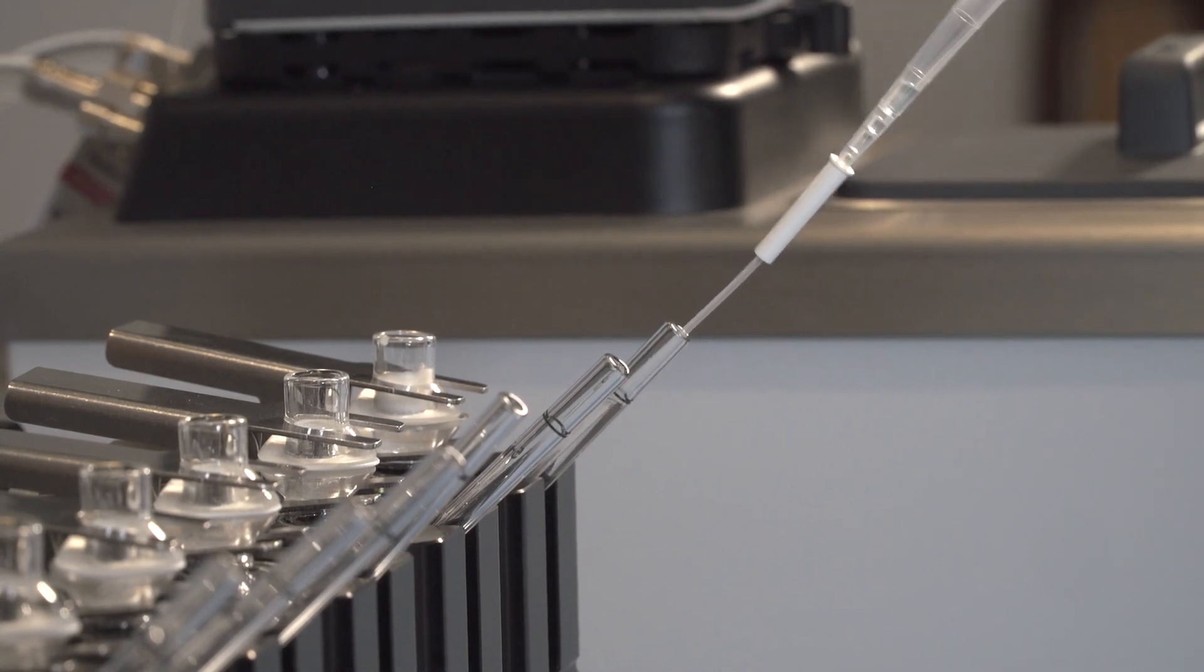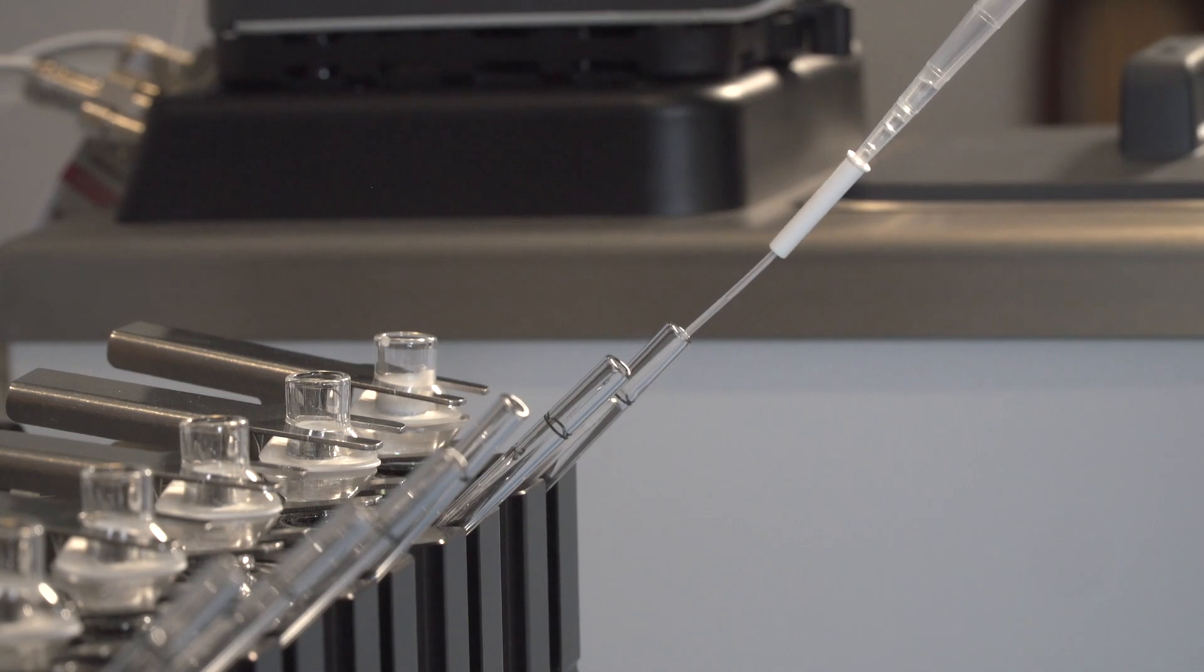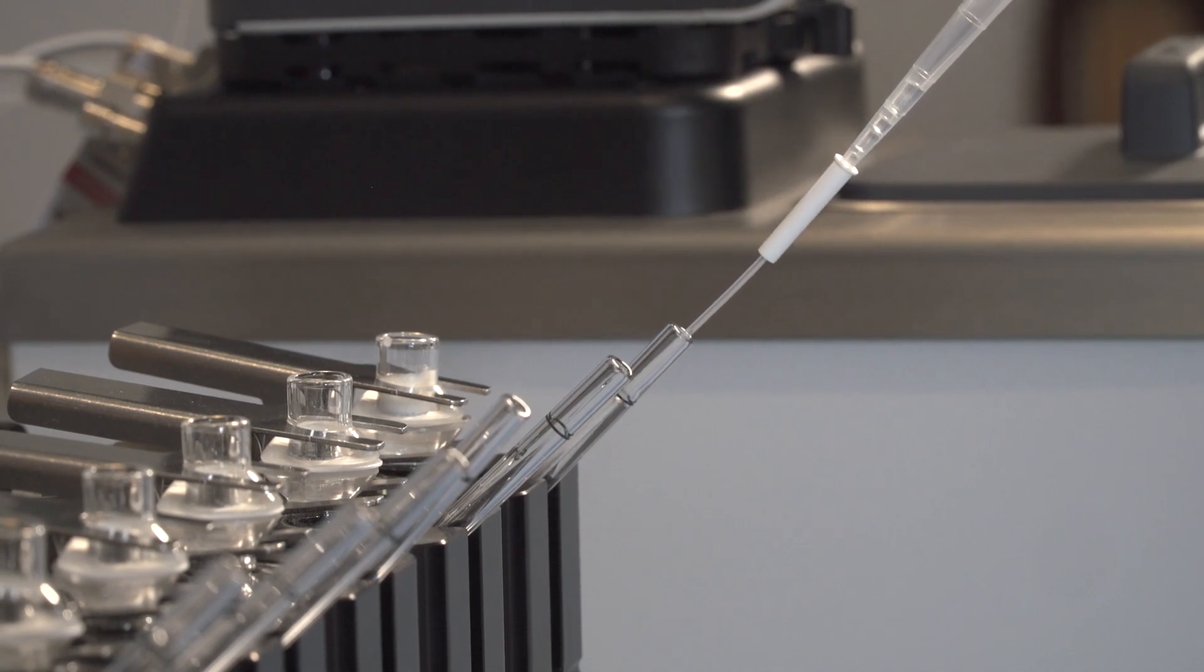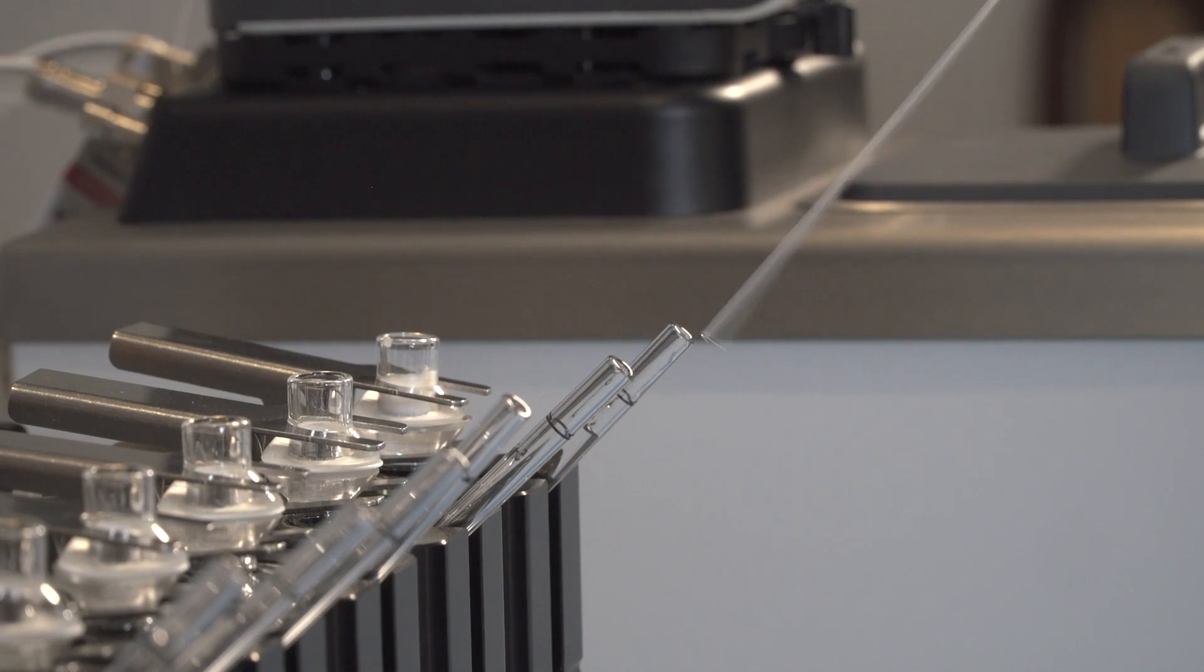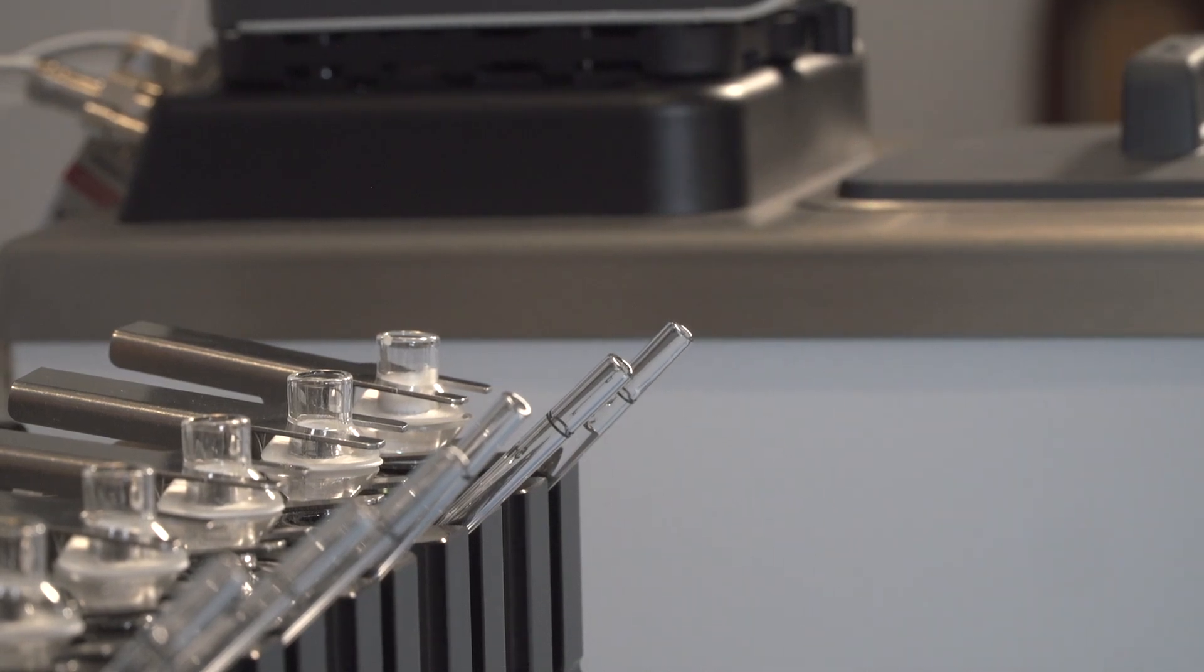Sampling must be performed from the center of the receptor chamber. Sampling can be performed with a pipetter using a PermeGear pipette tip, a syringe with a PermeGear syringe tip, needle, or thin cannula.